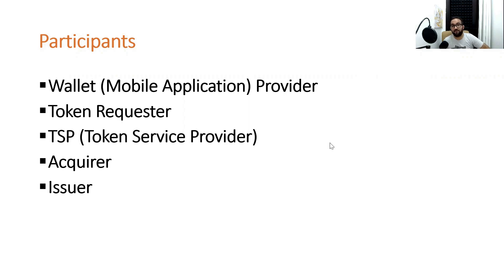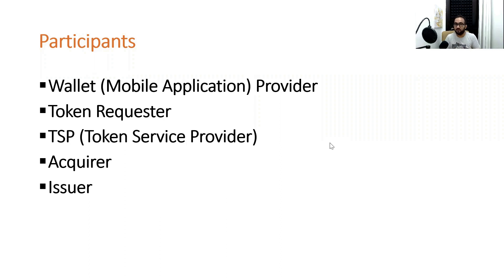Let's understand how many participants are involved in the end-to-end execution of tokenization and token-based payment transactions. The first one is the wallet provider or mobile application provider, where the customer enters card details and gets a token created. This is basically the application where we save our card data and secure it with a PIN or password. The second is the token requester — a separate system or application that collects card data from the wallet application and sends it to the TSP (Token Service Provider). In some cases, the wallet provider and token requester are the same entity — for example, Samsung Pay and Apple Pay can both be considered wallet provider as well as token requester.